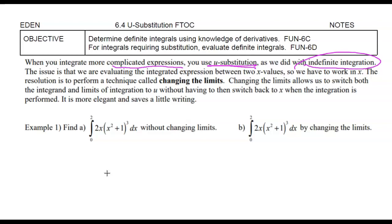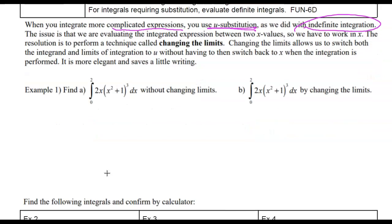Because we're using a u-variable — remember, that's like a dummy variable just so we can integrate — our original limits are x-values. So you have two choices: you can do your u-substitution and then plug u back in and keep it as x, or you can change the x-limits into u-limits. I'll show you both ways, and then you can decide. I'll tell you which one I prefer when we get there.